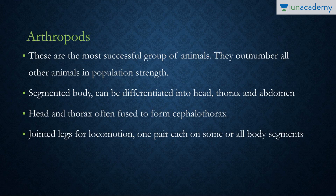Arthropods are the most successful group of animals in the entire animal kingdom. They have the most number of species and the greatest population. They have a segmented body which can be differentiated into head, thorax, and abdomen, and the head and thorax may be fused to form a cephalothorax.